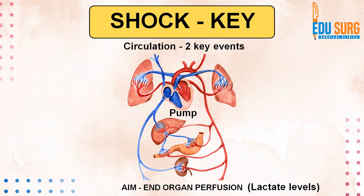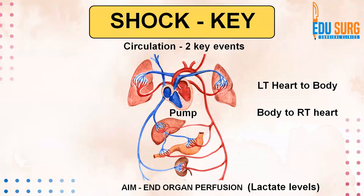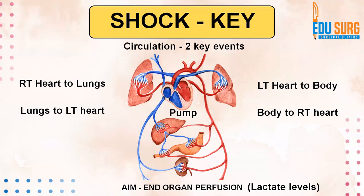If you are measuring blood lactate levels, you are basically looking at end organ perfusion. The two important parts of the system: one is the heart and body — the left heart pumps blood to the entire body and the entire body's blood returns to the right heart. The other important component involves the lungs: the right heart sends blood to the lungs, and the lungs provide blood to the left heart. These two systems need to work in sync.